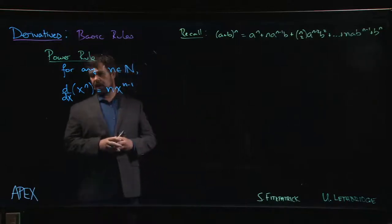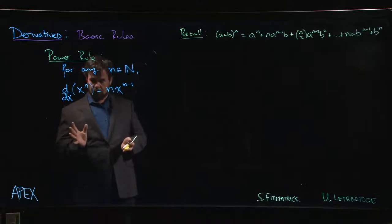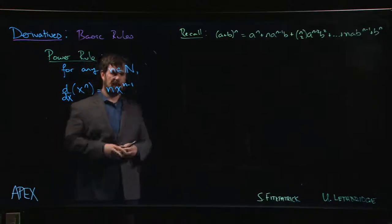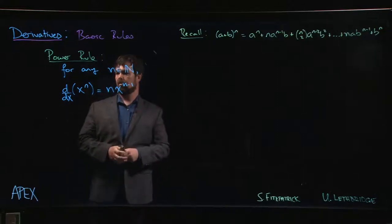Here we're going to let n be any positive integer exponent, and we're going to show that the derivative of x to the n is n times x to the n minus 1.